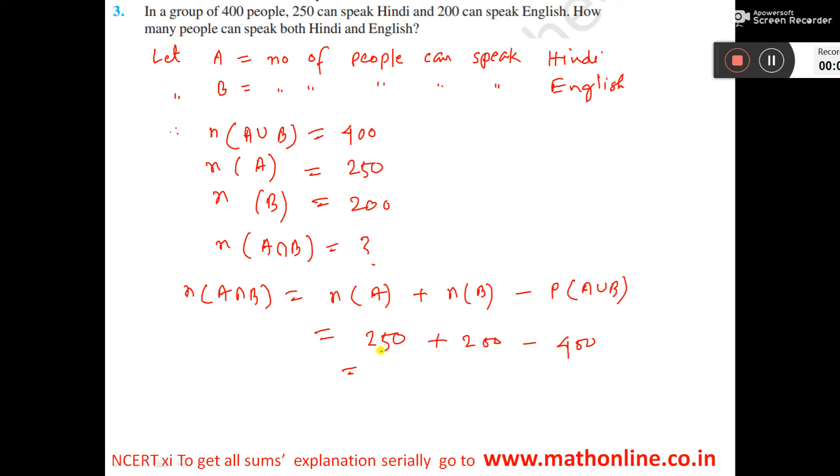So it is 450 minus 400, which equals 50. This is the answer: 50 people can speak both Hindi and English.